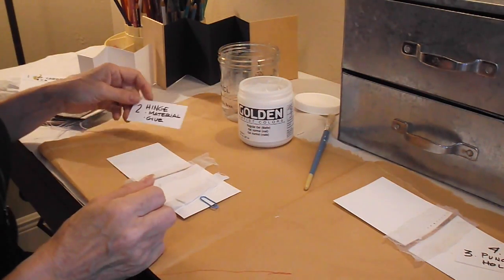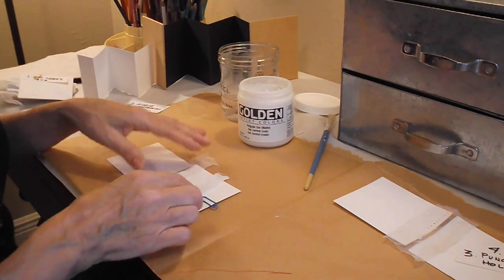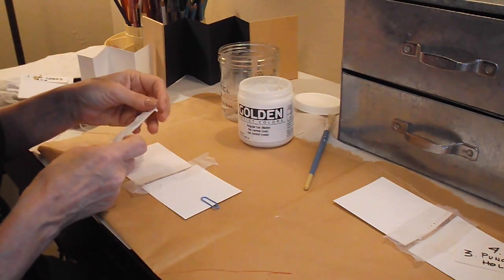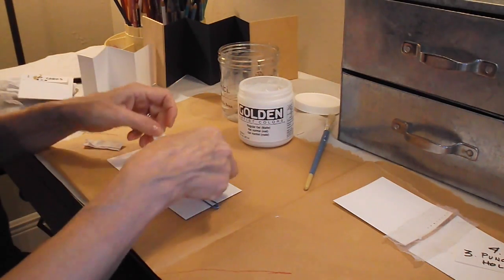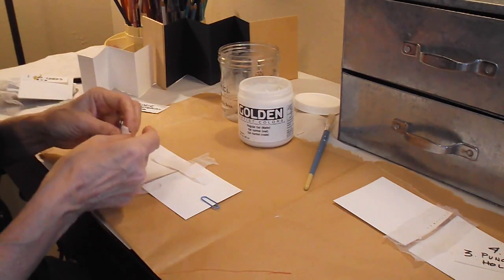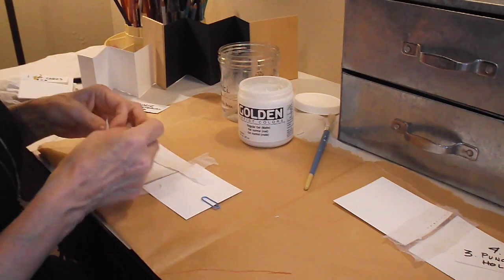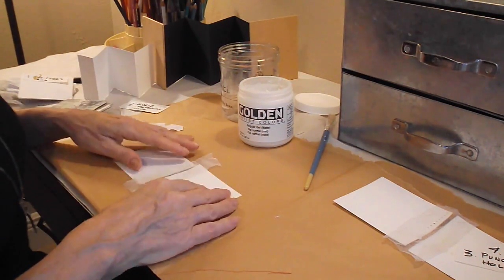The second step is really easy. You're simply going to take your hinge material, whatever that is—it could be muslin, it could be the netting, it could be a ribbon, it doesn't really matter.